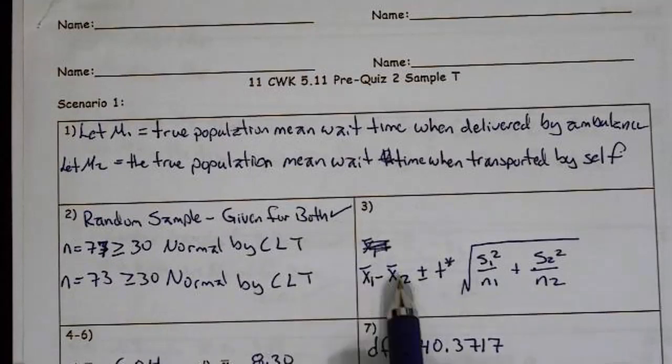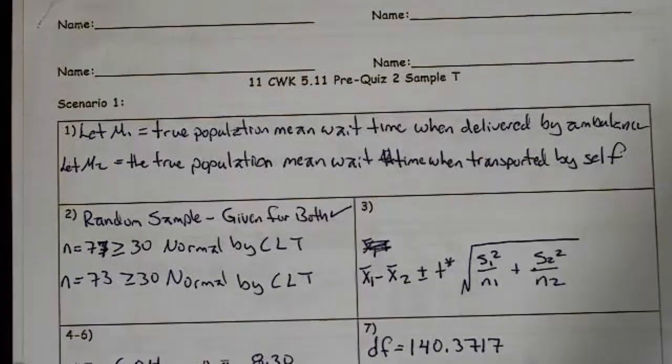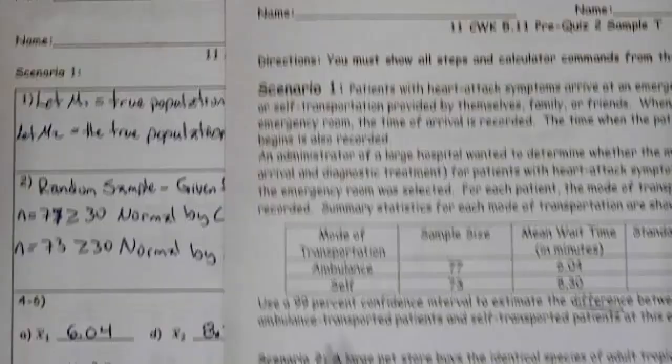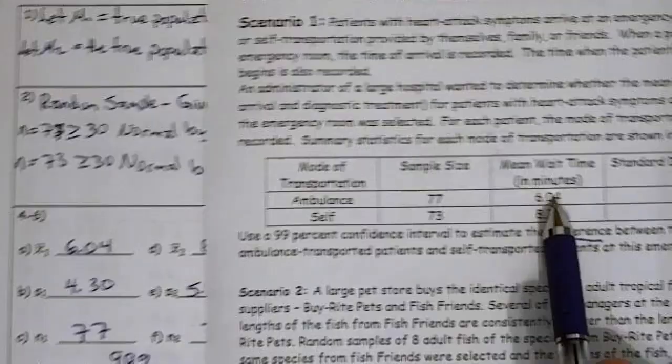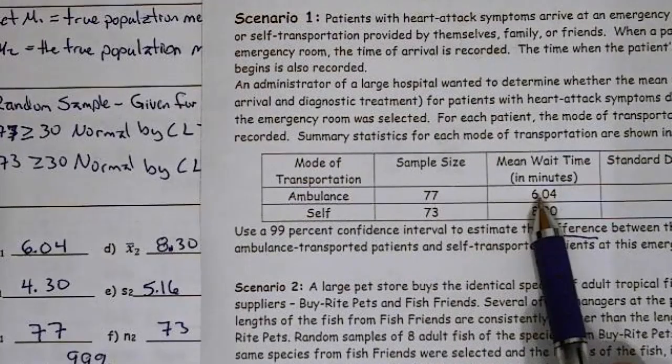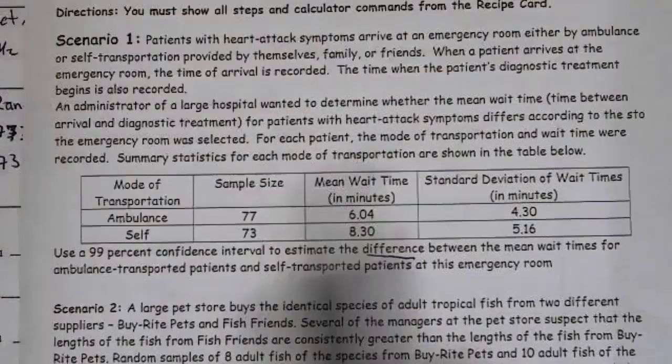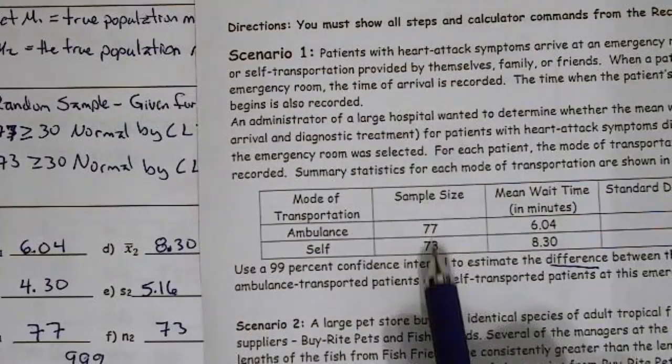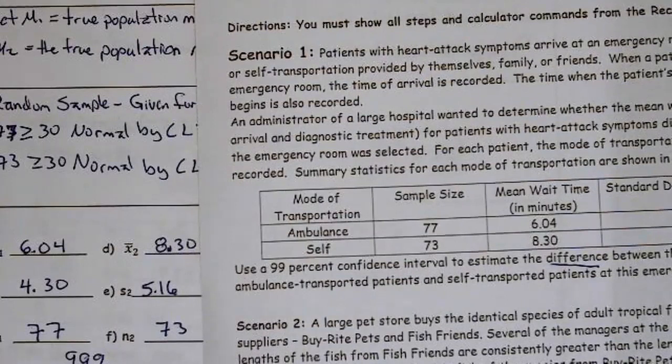And then we started recording the information that we had. Well, the information we have is 6.04 and then 8.3, and over here we had 4.3 and 5.16 for our standard deviations. We had sample sizes of 77 and 73, and we had a 99% confidence level.